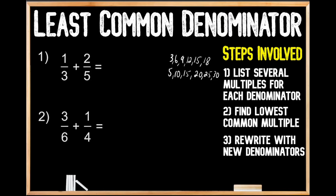Our second step is to find the lowest common multiple. We can see that fifteen is the lowest common multiple for both three and five, so our least common denominator is fifteen. Now that we've found our least common denominator, we're going to rewrite these fractions with our new denominators of fifteen. To keep these fractions equivalent, we multiply our numerators by the same value we multiplied our denominators by to get fifteen. Three times five equals fifteen, so one times five gives us five. For the second fraction, five times three equals fifteen, so two times three gives us six.